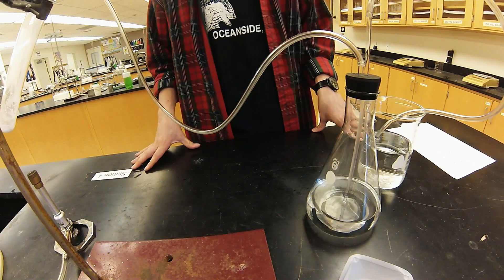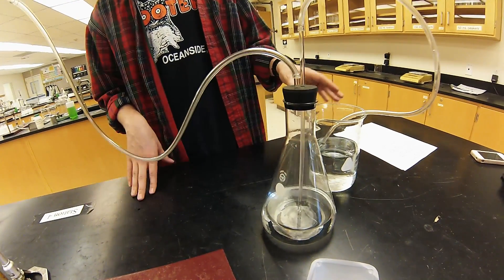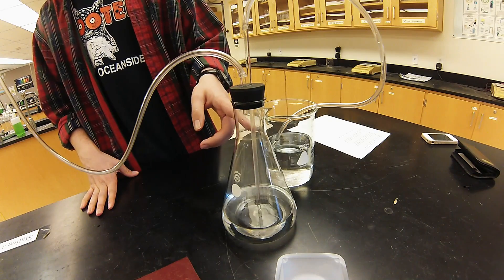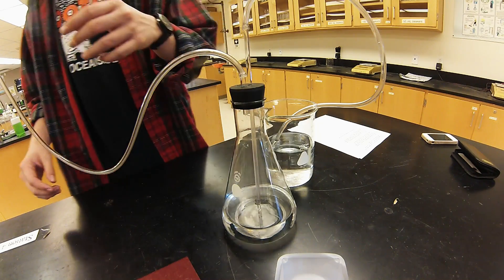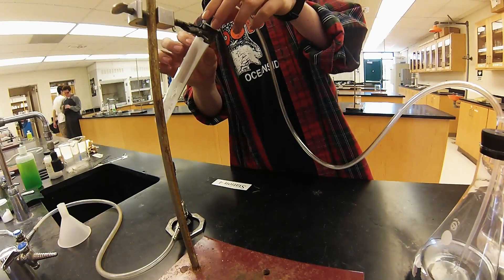After the system is cooled, we're going to equalize the pressure of the Erlenmeyer flask with the rest of the room. We break the vacuum that we formed by removing the stopper from the tube.